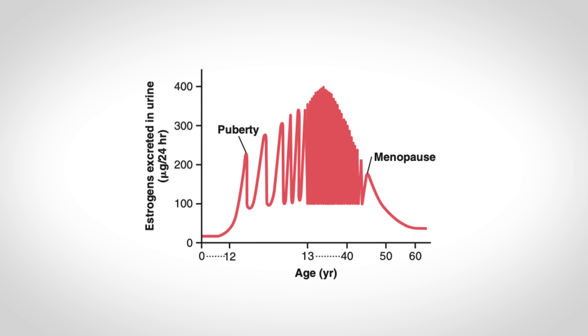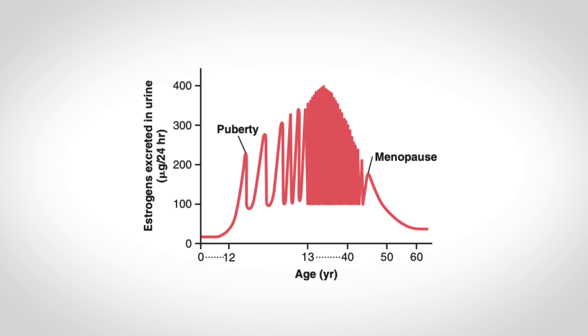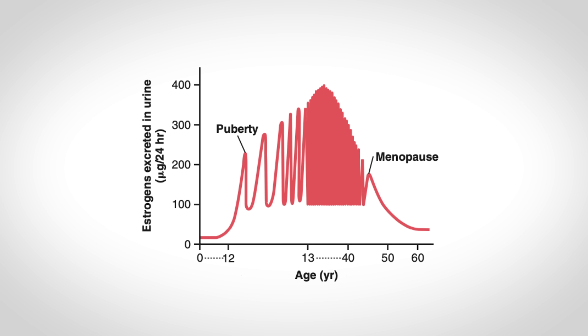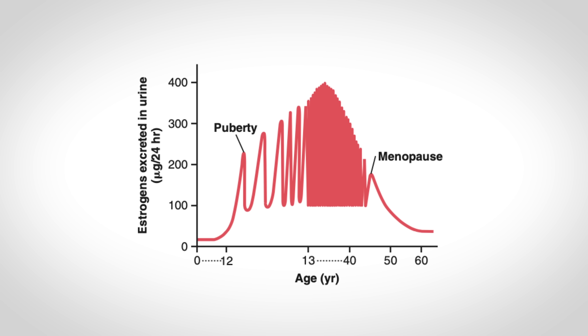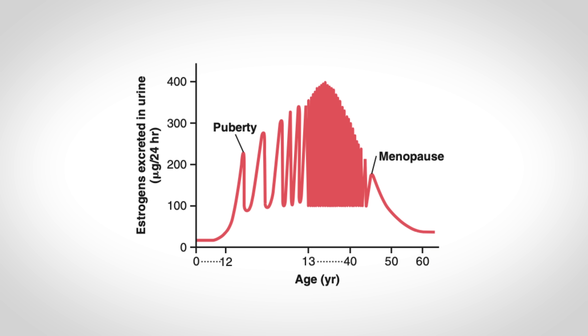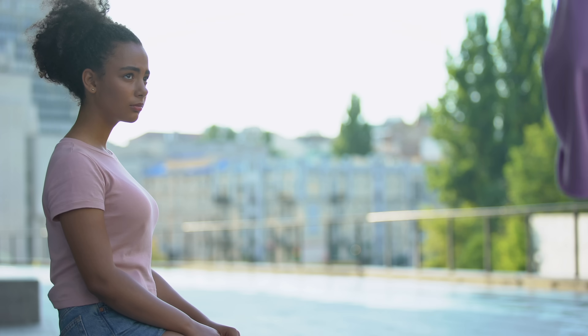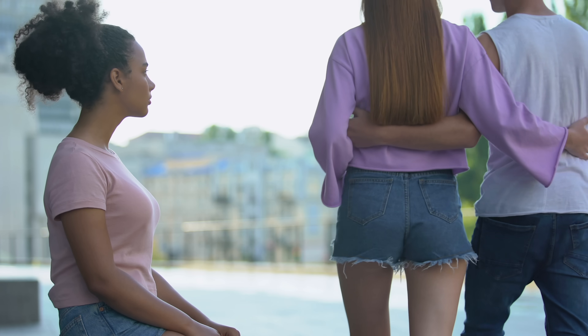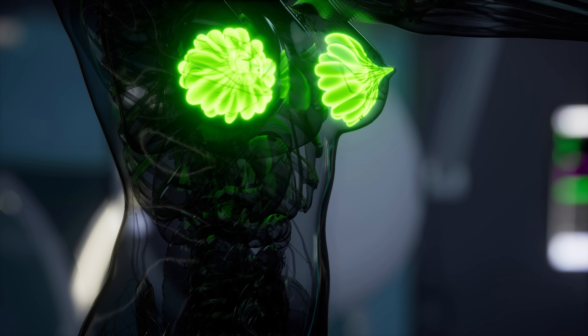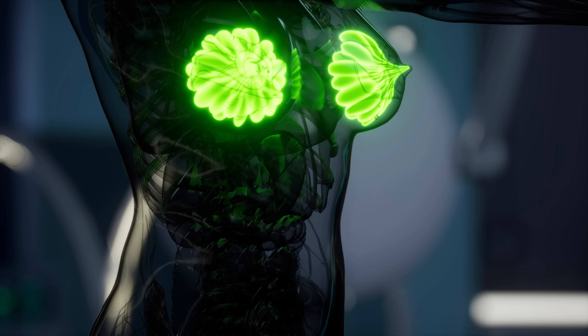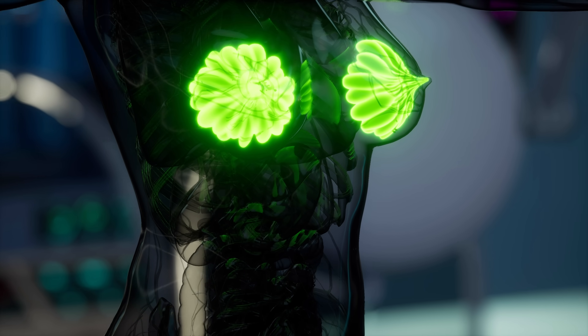You might wonder what these pelvic structures have to do with the breasts. Well, during puberty, estrogen released from the ovaries increases dramatically. Estrogen has many incredible functions, including promoting the development of female secondary sex characteristics, and one of those secondary sex characteristics is the development of breast tissue.